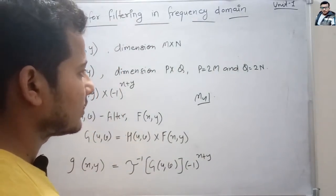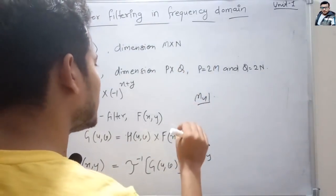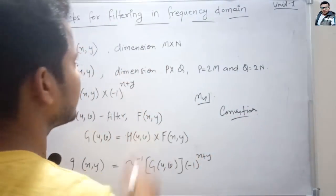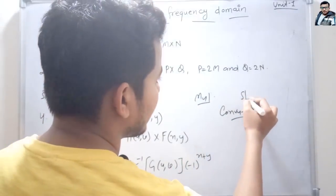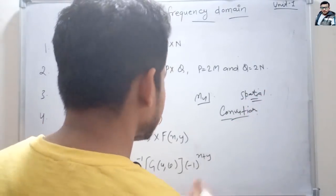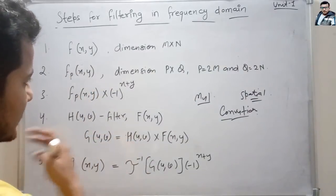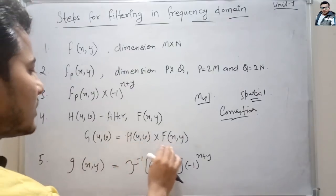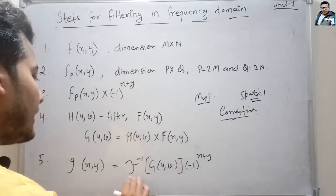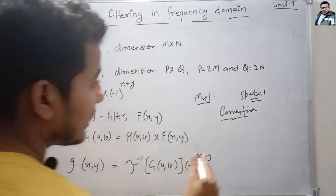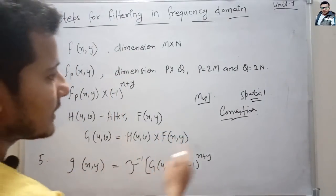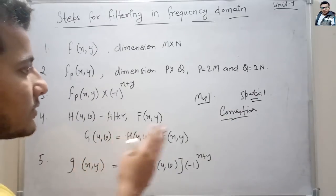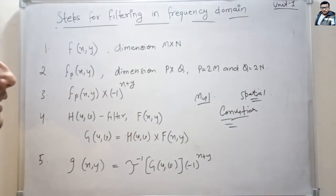In the spatial domain, there is a single operation called convolution for filtering, which requires only one operation. In the frequency domain, we require multiple operations: converting the image to its Fourier transform, multiplying by the filter, and then taking the inverse Fourier transform. However, the speed of frequency domain filtering is much faster than convolution, which is why we frequently use filtering in the frequency domain instead of the spatial domain.